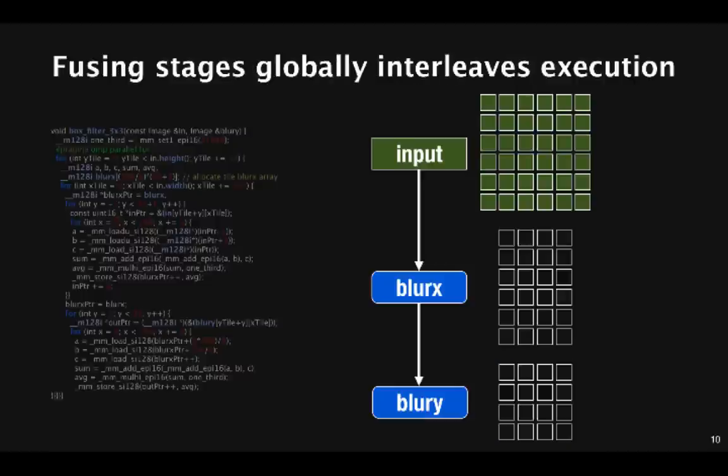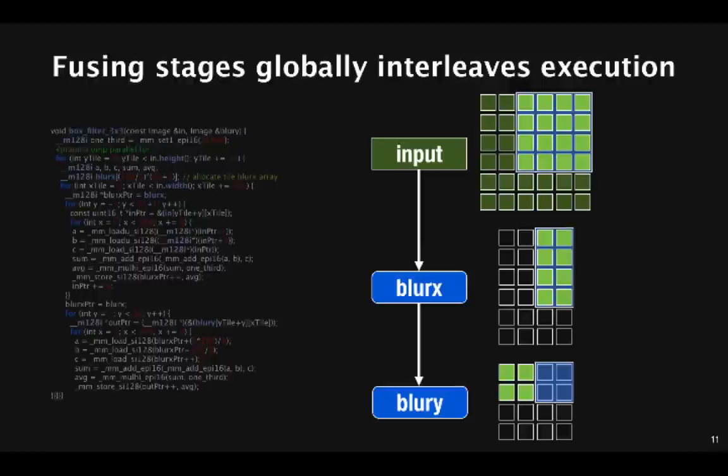The optimized version interleaves the stages instead. To compute a chunk of blur y, we first need the corresponding chunk of blur x, which loads a chunk of the input. The blur x stage filters that input, and then blur y immediately consumes it to compute a chunk of the output. So next we throw away that intermediate data, that chunk of blur x, load the next chunk of the input, compute the next chunk of blur x, followed immediately by that next chunk of blur y. So we've moved the computation of each chunk of pixels in a consumer stage closer in time to the computation of its inputs.